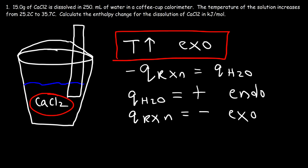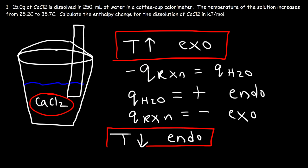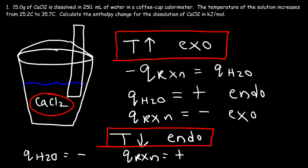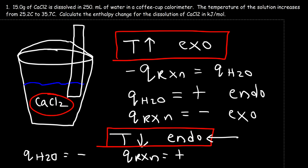Likewise, the reverse is true: if the temperature of the solution decreases, the reaction is endothermic. The temperature tells you what happens to the kinetic energy of the water molecules. If temperature goes down, water molecules are losing thermal energy — they released it to the reaction, so it's exothermic for the water but endothermic for the reaction. In our example, temperature goes up from 25.2 to 35.7°C, so the dissolution of calcium chloride is exothermic.